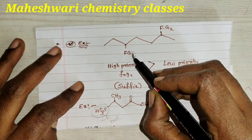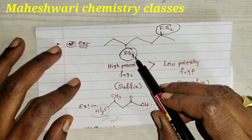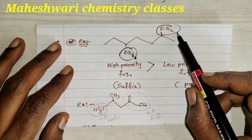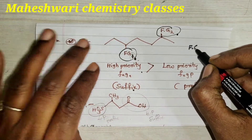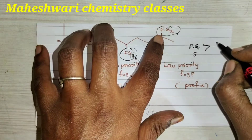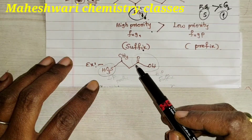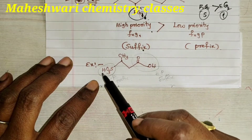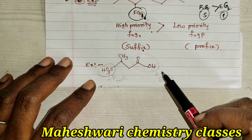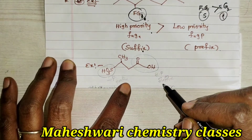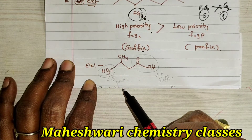For example, if carboxylic group (COOH) and sulphonic acid (SO3H) are both present: both are acids, but carboxylic acid comes first — it is high priority and considered as suffix. Sulphonic acid comes next — it is lower priority and considered as prefix.